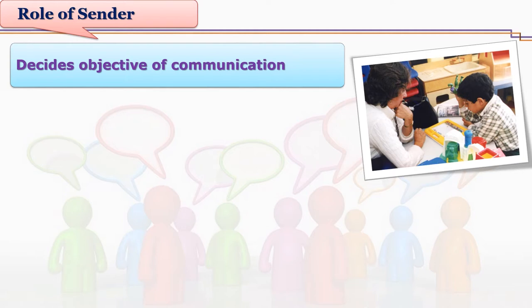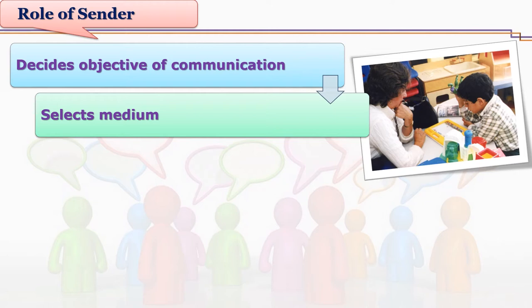What are the various roles of the sender? There is always some objective or intention of communication, which is decided by the sender. The sender first decides the aim and then initiates communication to achieve it. The sender also decides how to convey the message — which medium to use. You can see in the picture that a teacher wants the learner to learn something new; the intention is clear and the teacher has selected a medium. The role of selecting the proper medium always lies with the teacher, who need not only lecture but can select any medium, as long as the objective is clear.